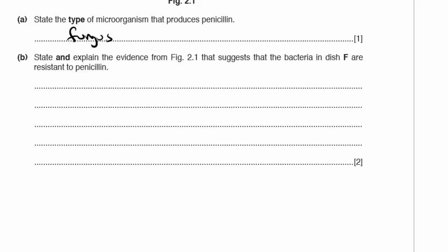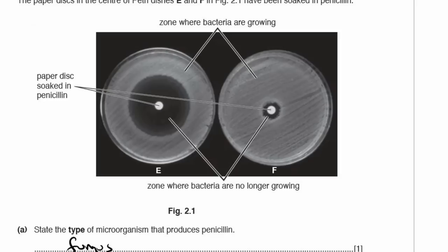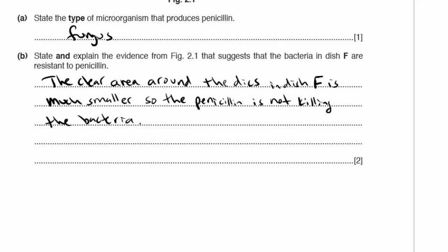State and explain the evidence from figure 2.1 that suggests the bacteria in DISH-F are resistant to penicillin. The clear zone in DISH-E is larger than the clear zone in DISH-F. The clear area around the disc in DISH-F is much smaller, meaning the penicillin is not killing the bacteria — that is the explanation for the resistance.